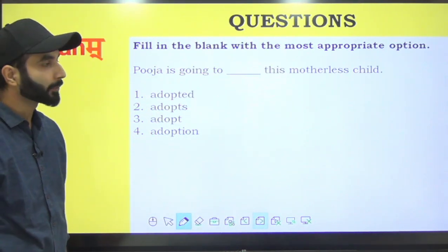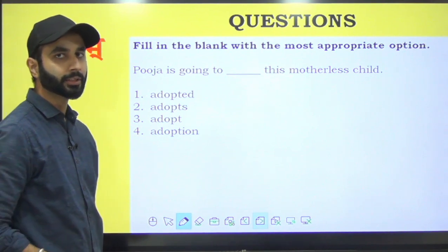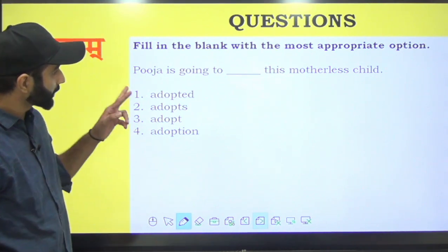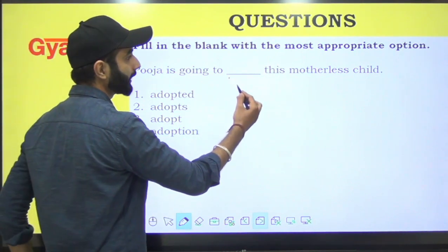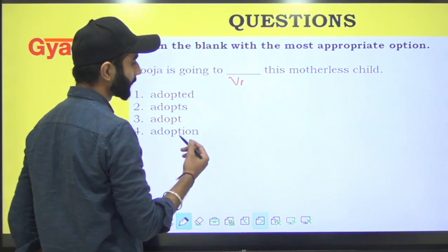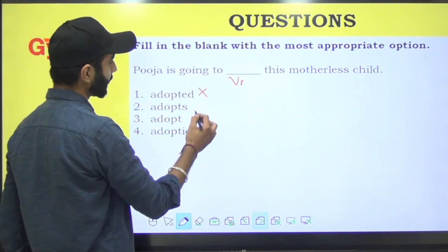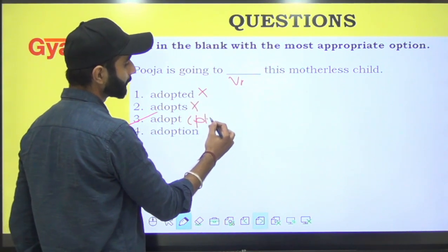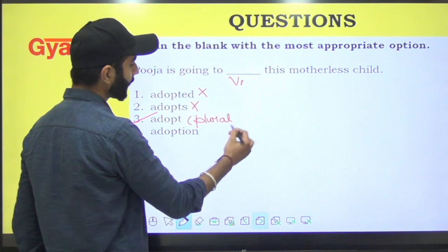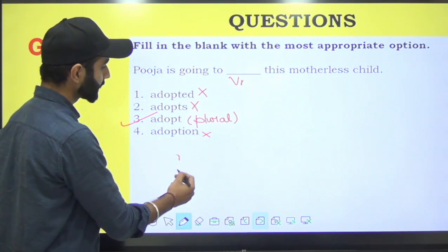Next, fill in the blank with the most appropriate option. Pooja is going to dash this motherless child. Now, 'to' is there so 'to' ke saath follow honne wala verb ka first form hoga. Adopted, adopts, source form of verb. So it should be adopt. The answer is C.